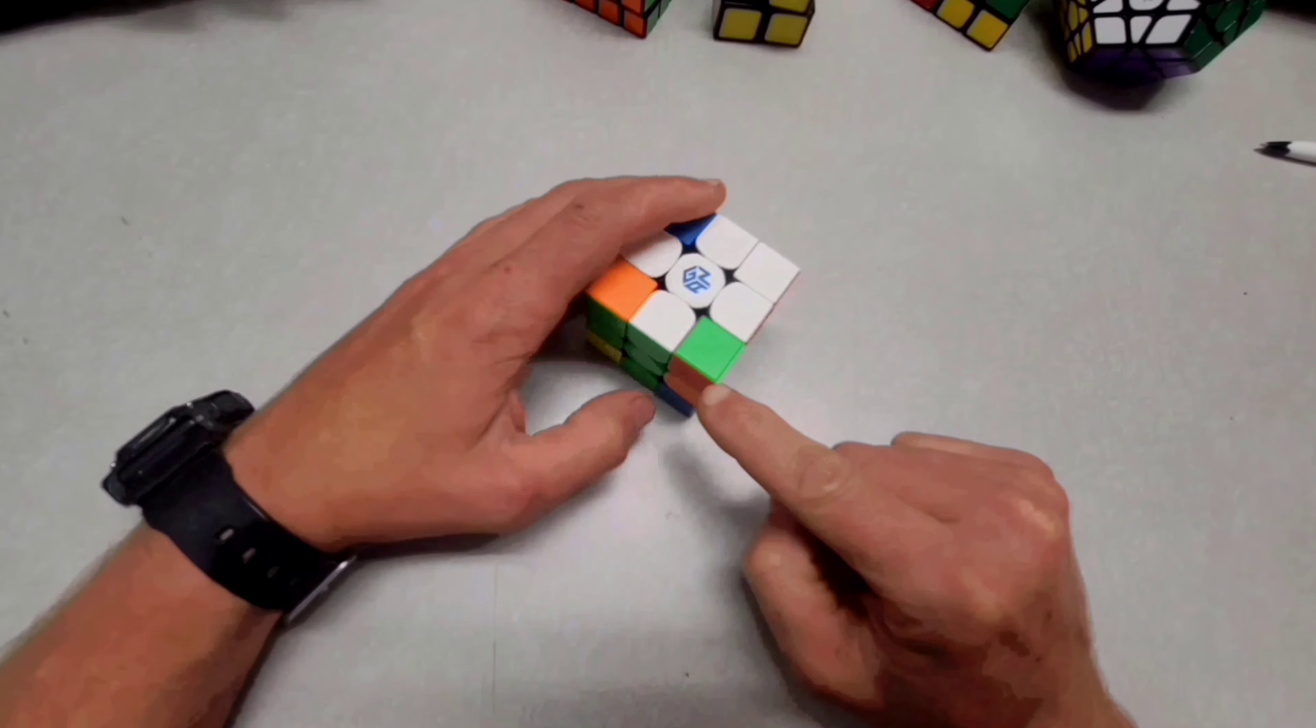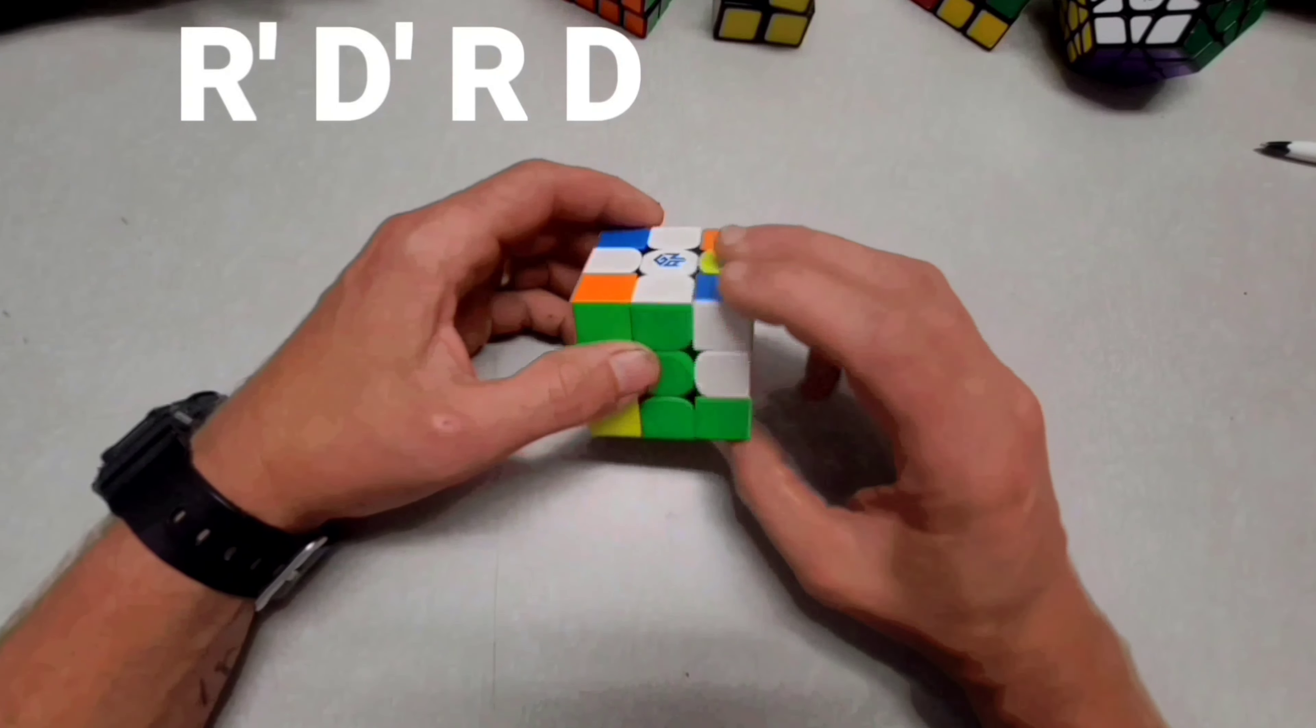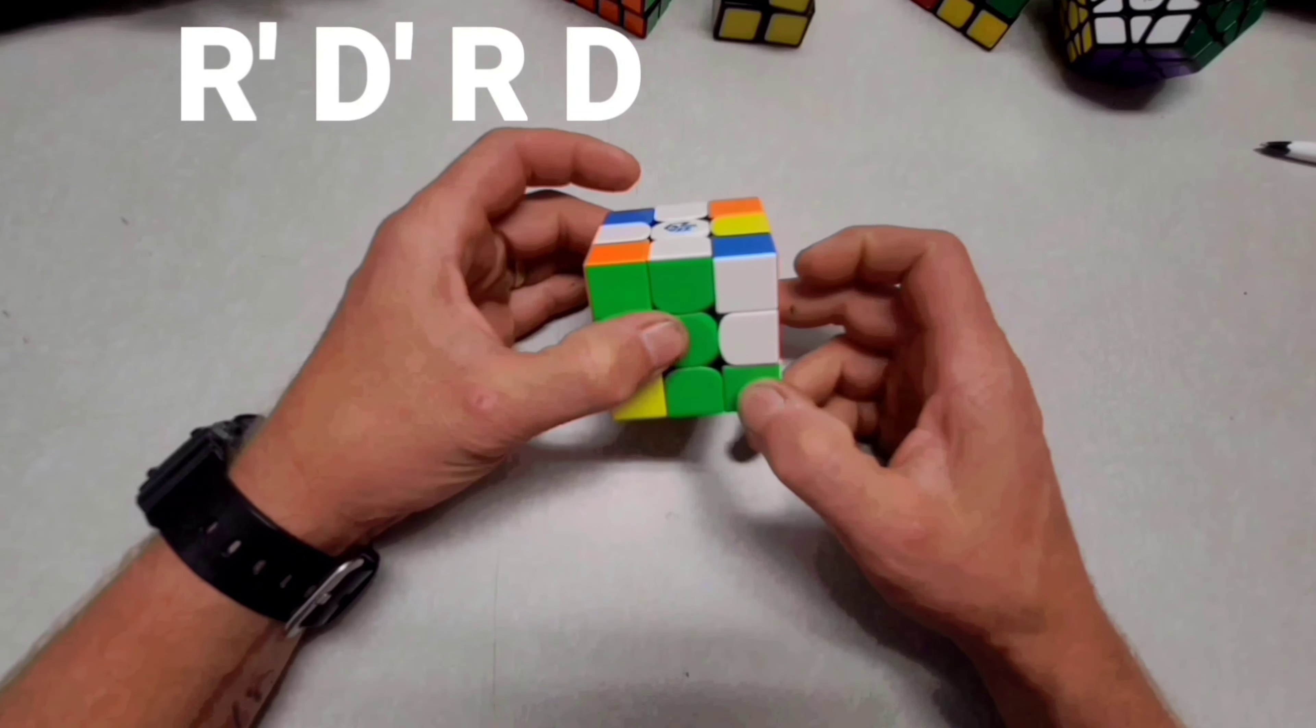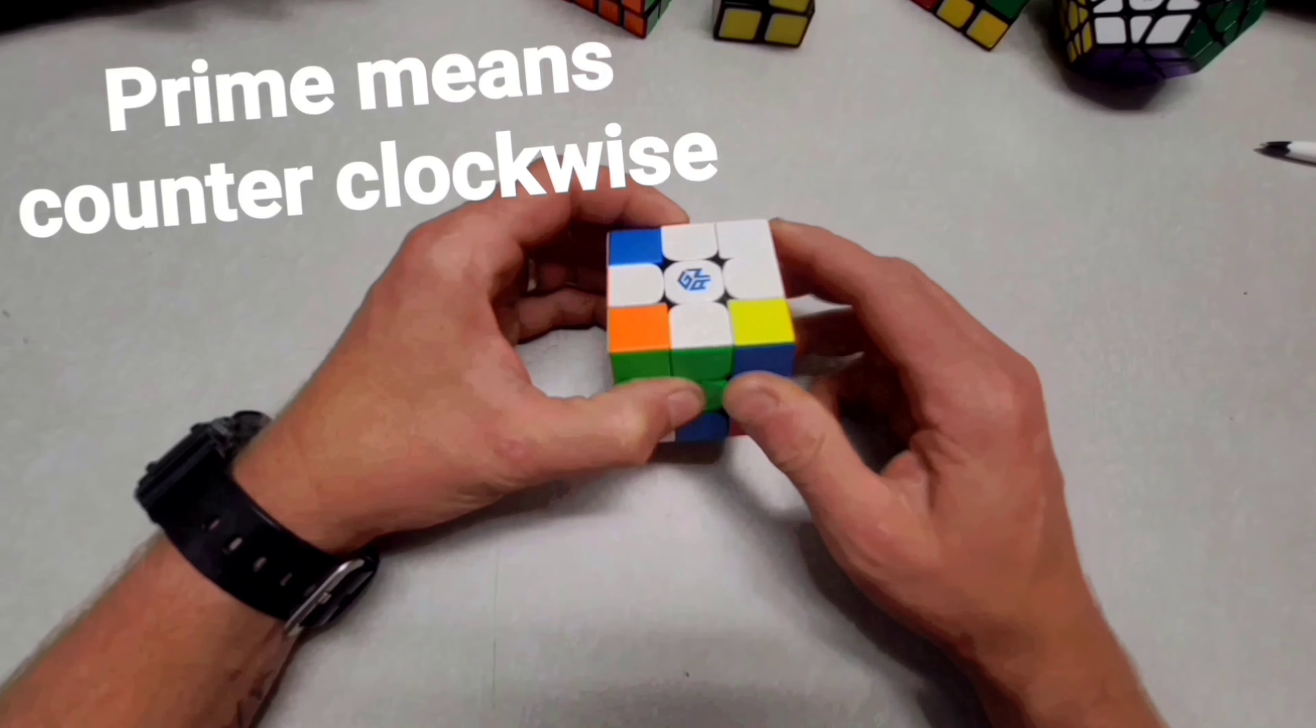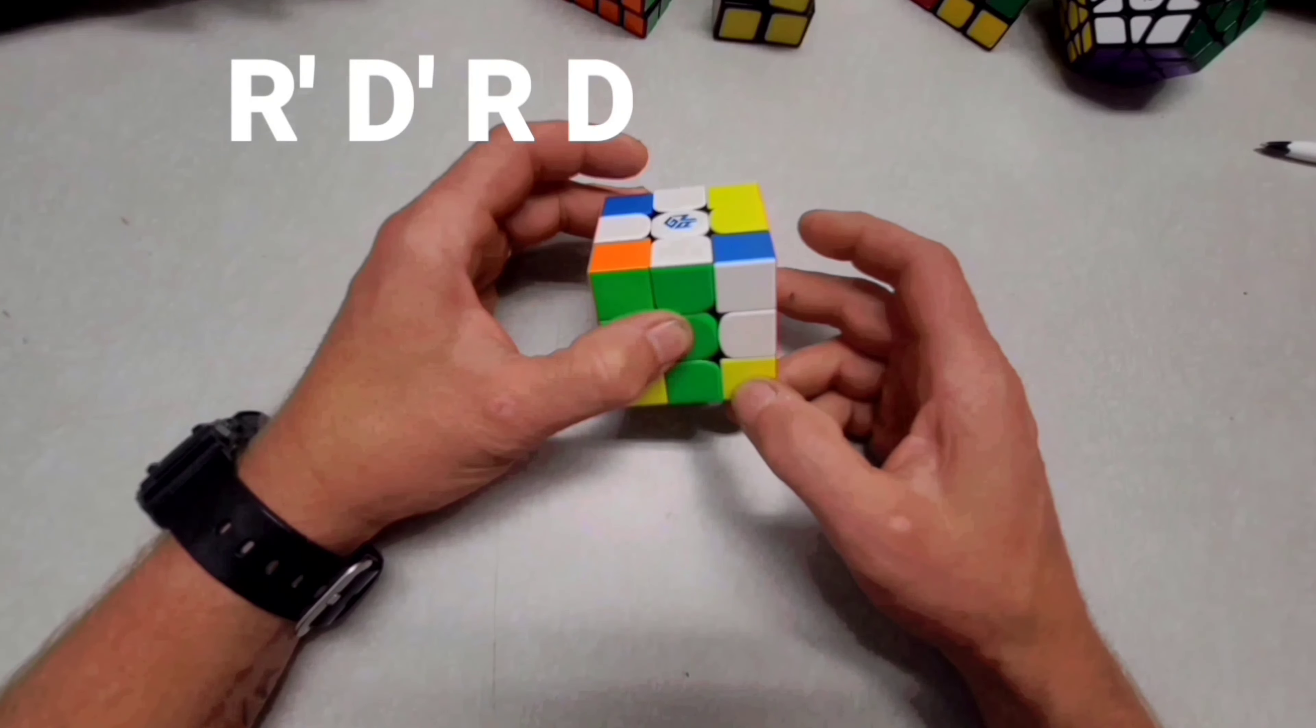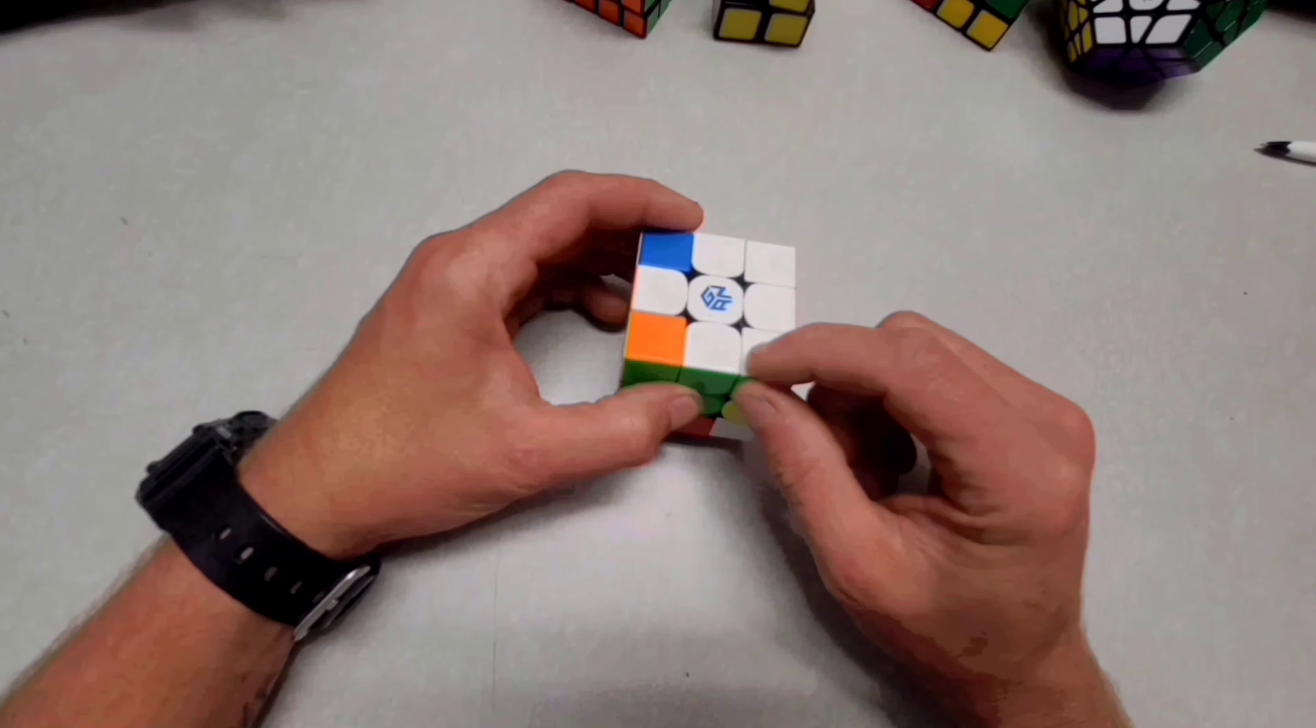This one's already in. Here's one right here. It needs to be flipped around. So we'll do the right, right prime, down prime, right, regular D, right prime, down prime, right. See, it made it.